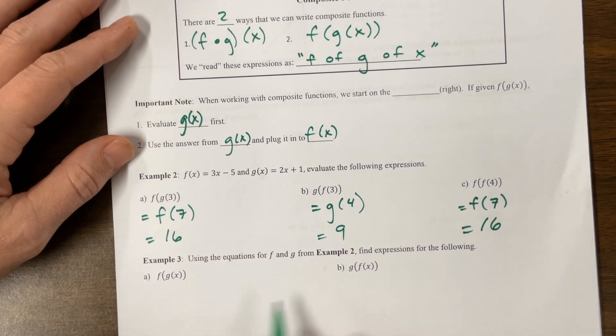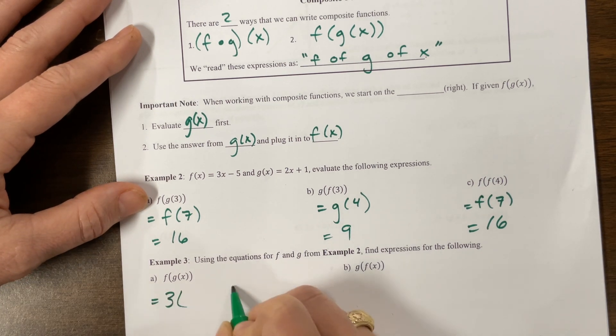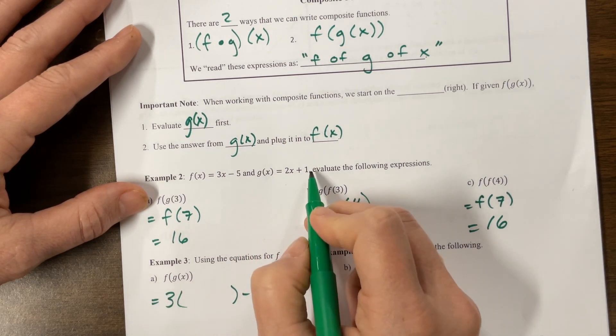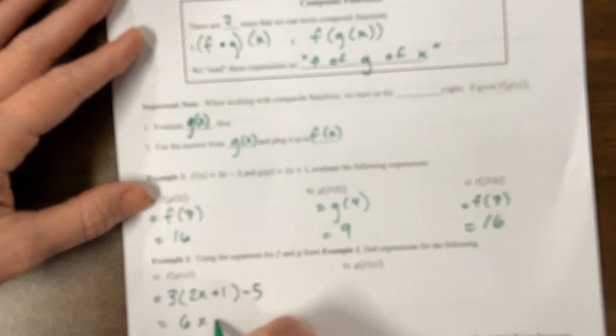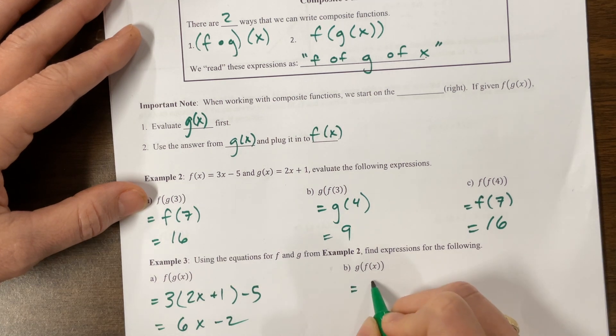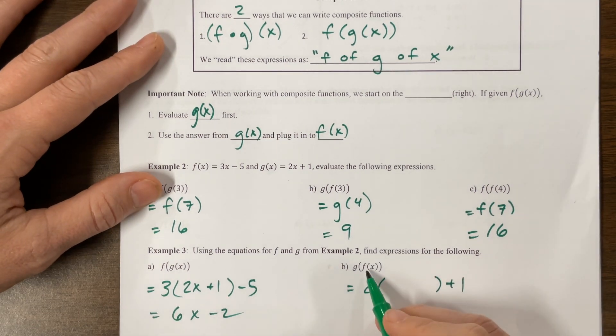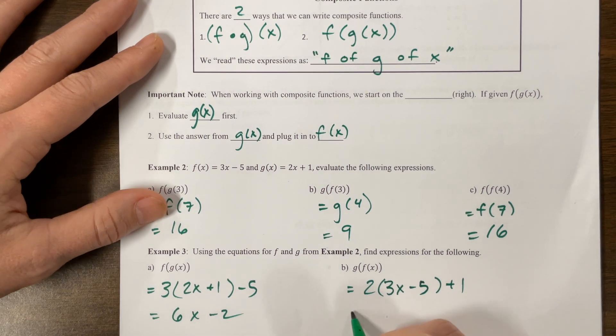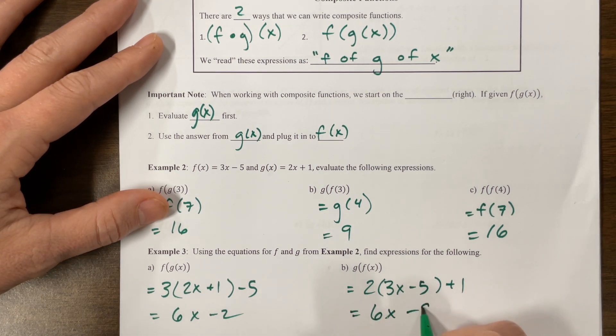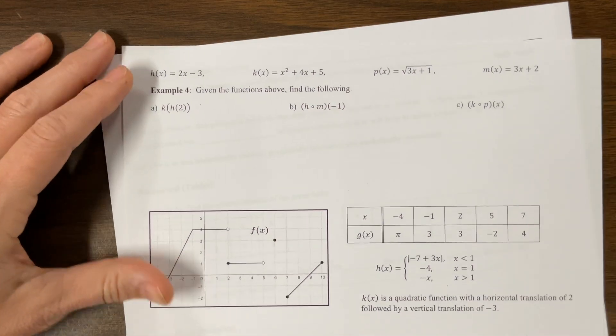Using the equations f and g from here, find the expression. So f means we have 3 times something minus 5. The something is now going to be g, which is 2x + 1. So this will be 6x + 3 - 5 is minus 2. And then the other one, g was 2 times something plus 1. The something is the f, which is 3x - 5. 6x is minus 10 plus 1, and so it becomes minus 9. Hopefully that makes sense to you.